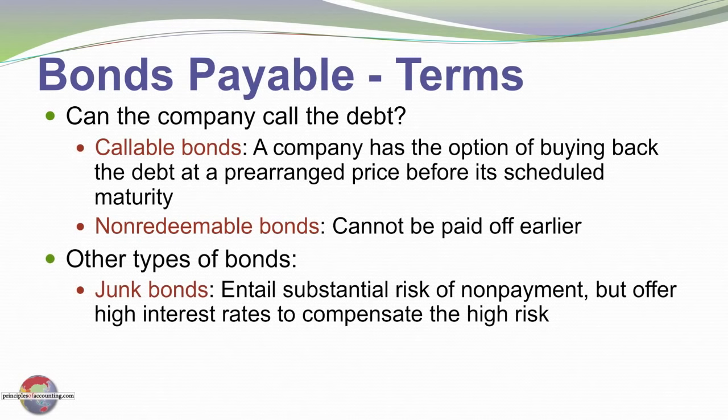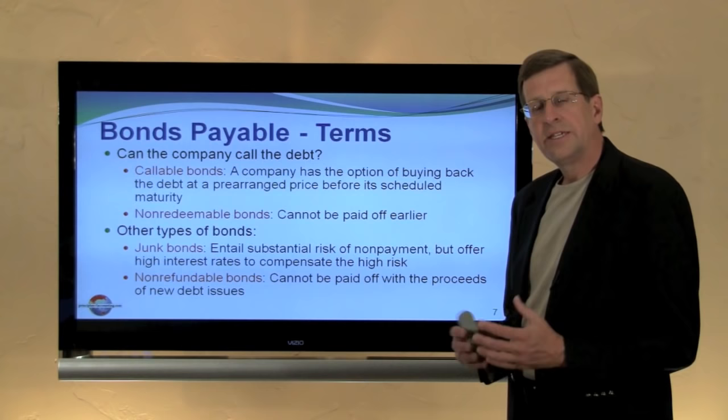Other types of bonds include junk bonds, which are essentially high-risk bonds where there is a likelihood they may not be repaid, and they involve substantially high rates of interest. They might arise in some type of restructuring or coincident with a very risky business transaction. People may be willing to accept that risk for the much higher yield or rate of return, but they often find themselves disappointed when the bonds go into default.